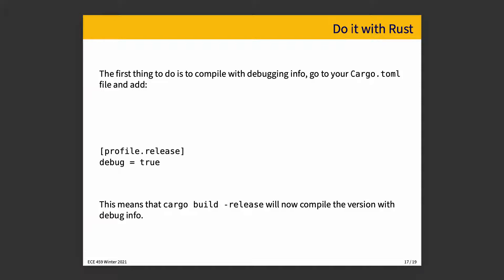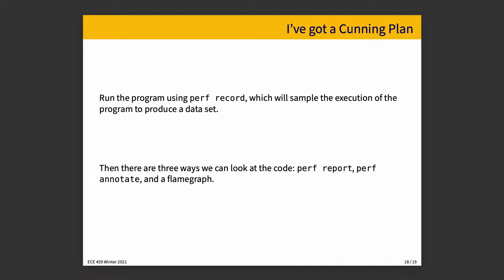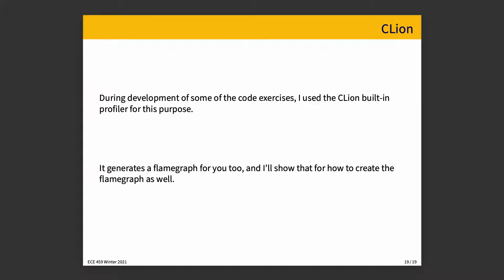The basic plan is to run the program using perf record, which samples the execution and produces a dataset. We can then look at perf report, perf annotate, as well as a flame graph. There's guidance on generating a flame graph on the command line, but the flame graph I'll show is from the CLion built-in profiler, since it generates one for you automatically and saves a few steps. We'll first profile using perf, then I'll show the CLion side as well.